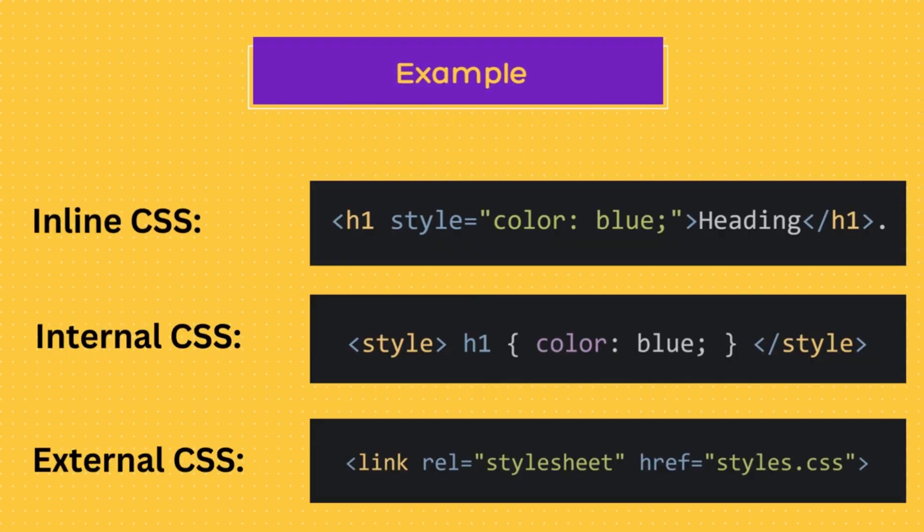You can see examples of inline CSS, internal CSS, and external CSS here. In the first example, we have used the style attribute. In the second example, we have used the style tag, while in the last example, we have used the link tag with the href attribute pointing to the CSS file. It is recommended to use external CSS as it allows for better separation of concerns between HTML and CSS, making it easier to maintain and update styles across multiple pages. Additionally, external CSS can be cached by the browser, resulting in faster page loading times.